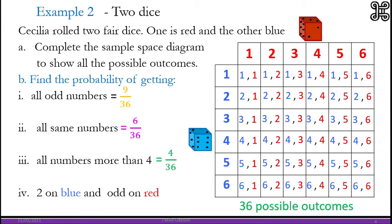Then we have 2 on blue and odd number on red. 2 on blue, odd number on red. This is specified. 2 on blue, odd number on red. So there are 3 options. So it's 3 out of 36.